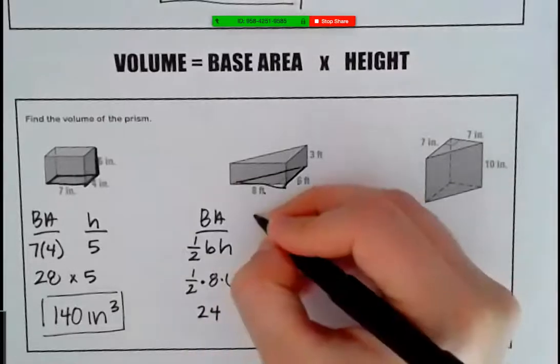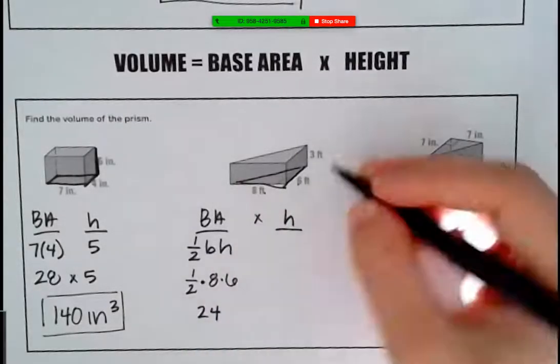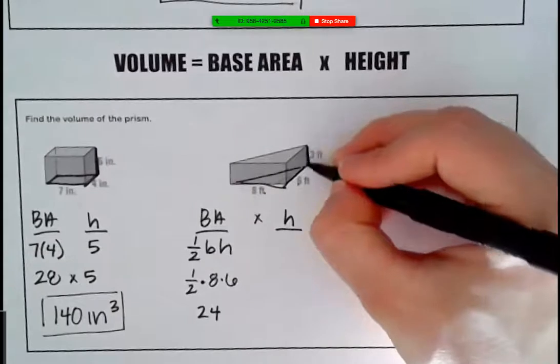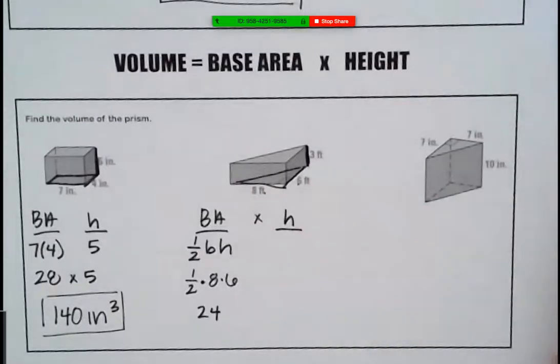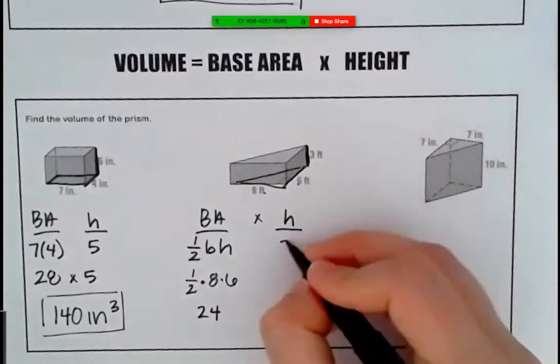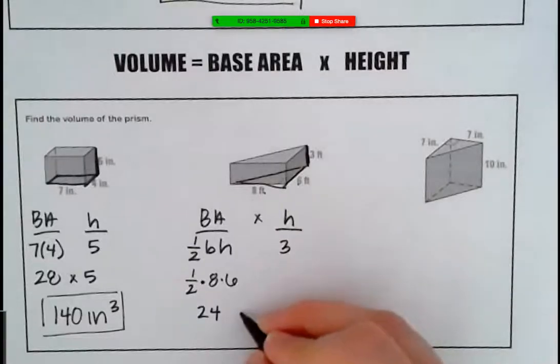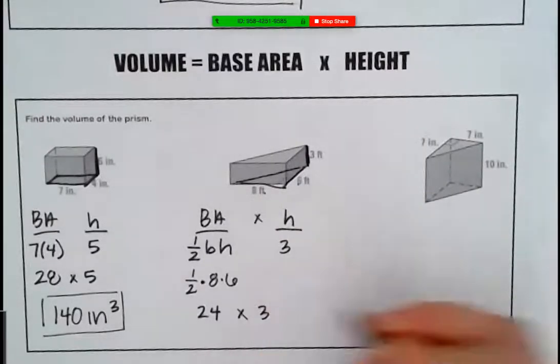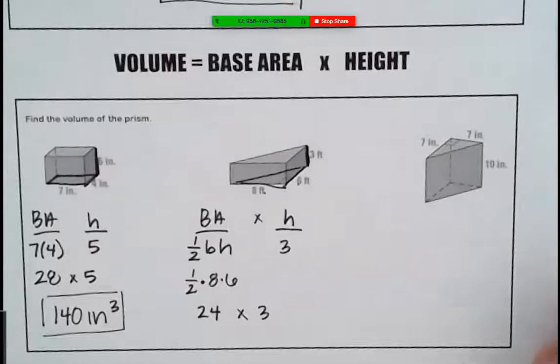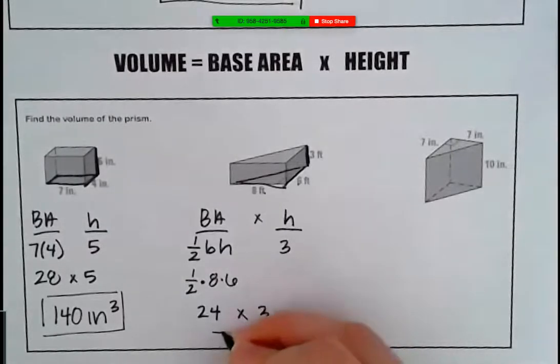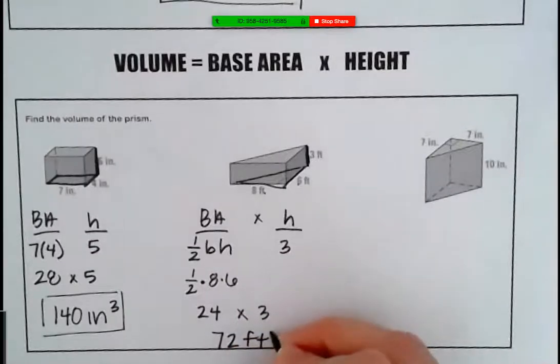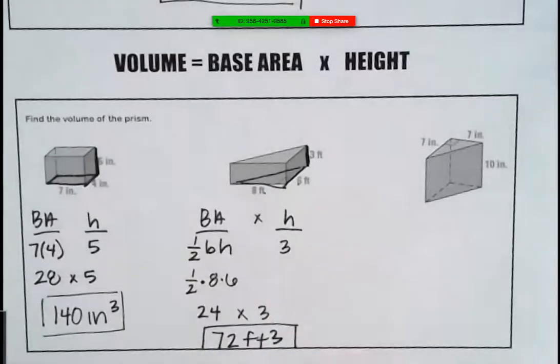Now we have to figure out what our height is. So how tall is that prism? Three. So now we're going to take 24 times three, which is 72 feet cubed. Perfect. I was going to put squared, I'm just so used to it.